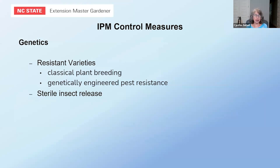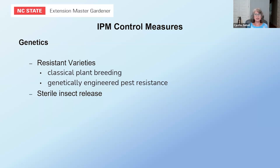Genetics is a great method for controlling certain problems. Resistance is part of genetics now, and we have multiple ways of achieving it. Classical plant breeding has been done for many hundreds or thousands of years. Today we also have genetically engineered pest resistance, where specific genes can be isolated and put into specific crops to protect against a particular pest. Sterile insect releases involve breeding sterile insects and releasing them into the environment — they mate with normal insects but can't produce offspring, reducing insect populations. This is on the new forefront of control measures.